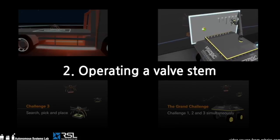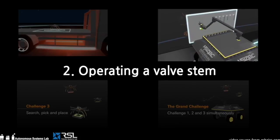In the second challenge, a UGV has to locate and reach a panel, then physically operate a valve stem.